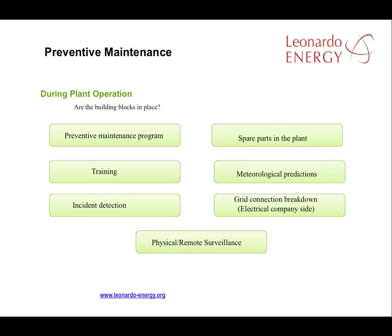Preventive maintenance during plant operations starts with a good preventive maintenance program. Staff should complete comprehensive preventive maintenance training. Good monitoring and surveillance for incident detection is vital. Spare parts need to be available, accessible and correctly stored. A meteorological station to ensure good weather forecasts is an important tool, and good local or remote security and surveillance systems are important.